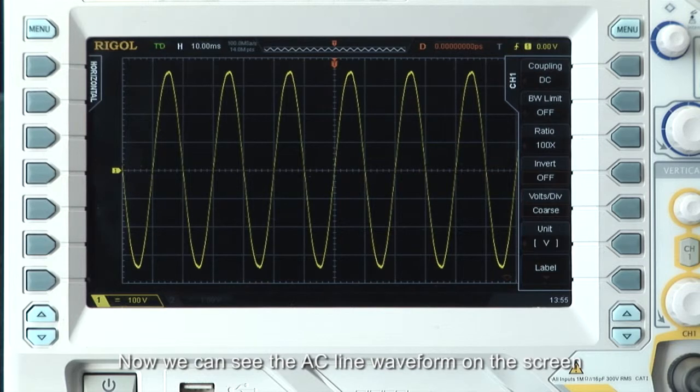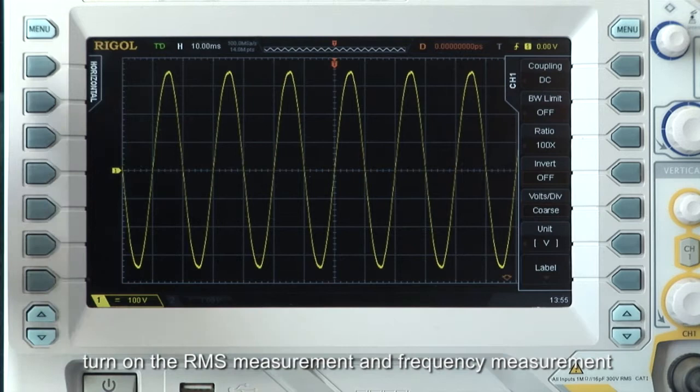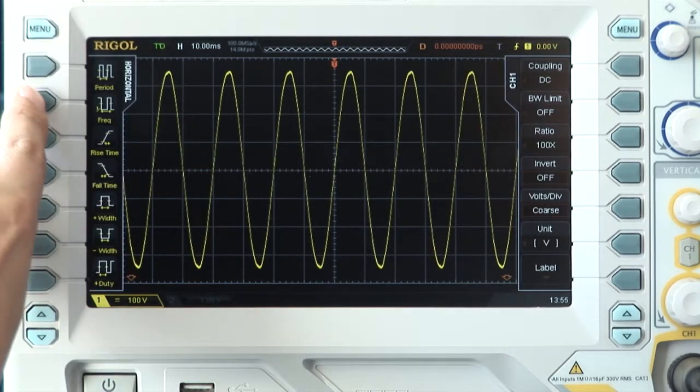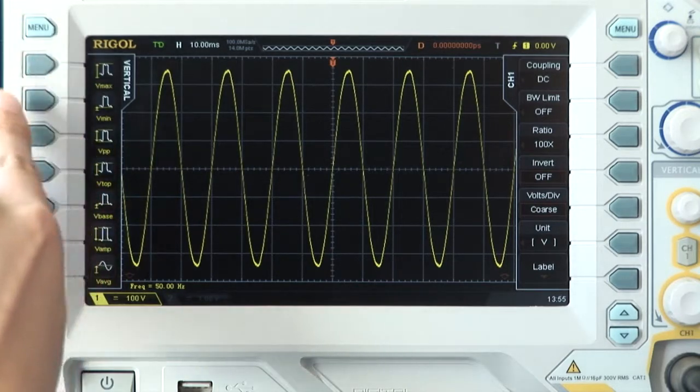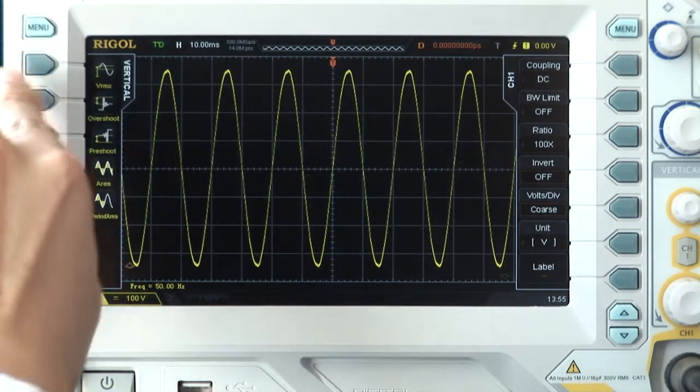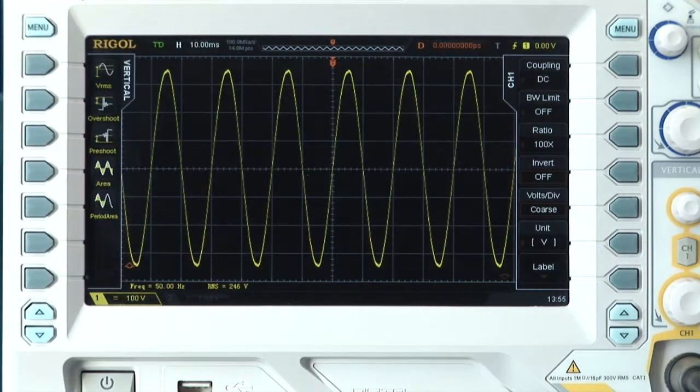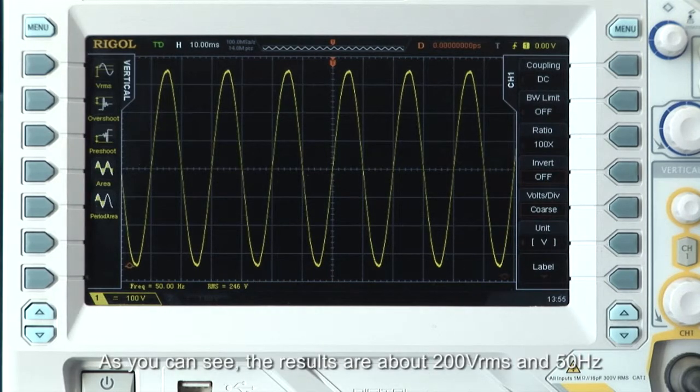Now we can see the AC line waveform on the screen. Turn on the RMS measurement and frequency measurement. As you can see, the results are about 200 volts RMS and 50 hertz.